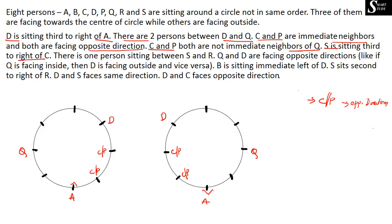The next information is: S is sitting third to the right of C. So C's third right should be S. We already know that either C or P are going to face inward or outward, and these two persons face opposite directions to each other. If C is facing center, C's third right goes one, two, three — but Q is already there, so S cannot be substituted there. If C is facing outward, C's third right would be one, two, three — so S can be substituted there. This forms multiple possibilities, so we hold this information.